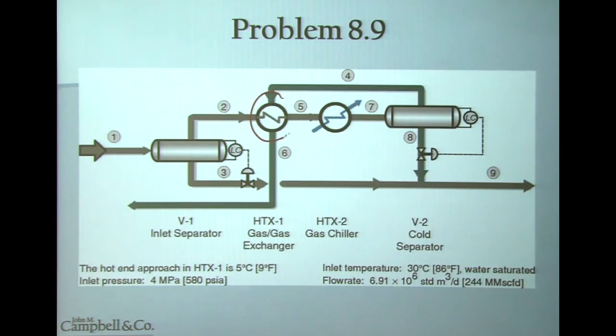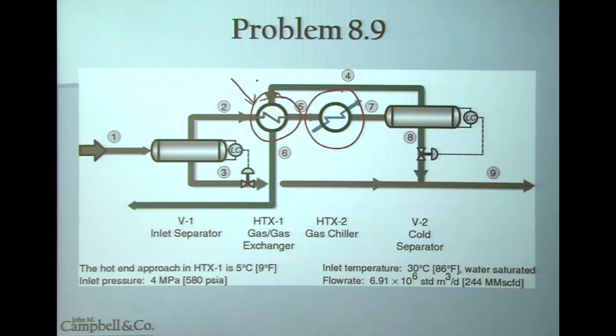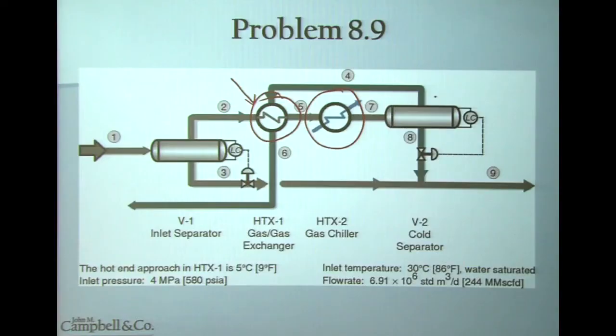During this G4 session, you will be asked to determine the duty of the gas-to-gas exchanger and the duty of the chiller. Throughout the course, as we progress, you will take the gas-to-gas heat exchanger and figure out how much surface area is required, and also determine how much plot space is required for the gas-to-gas cooler. During the separation section, you will learn how to size the cold separator and the warm separator.